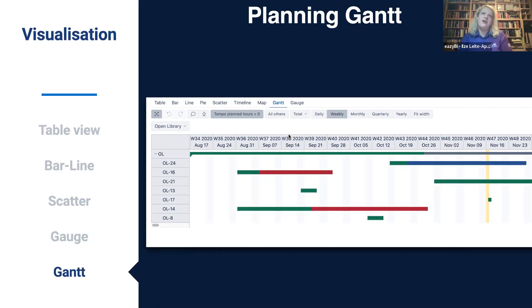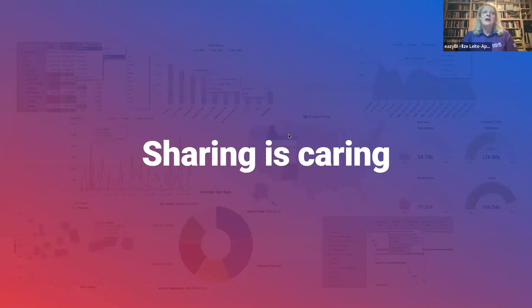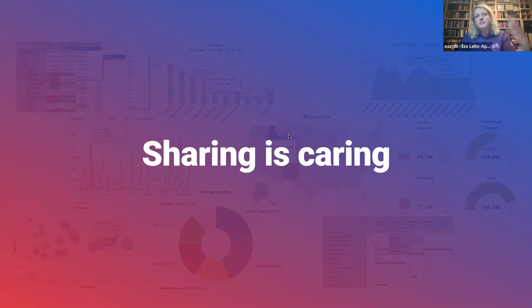We also have a map chart to show information on maps, a pie chart as we already saw, and a timeline chart which is very similar to a line chart. One more thing before we summarize.